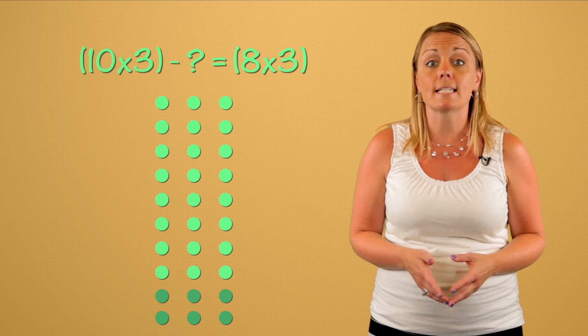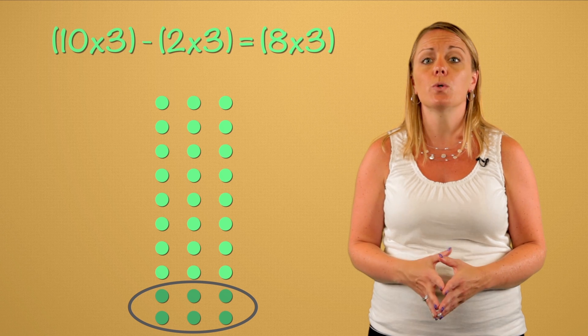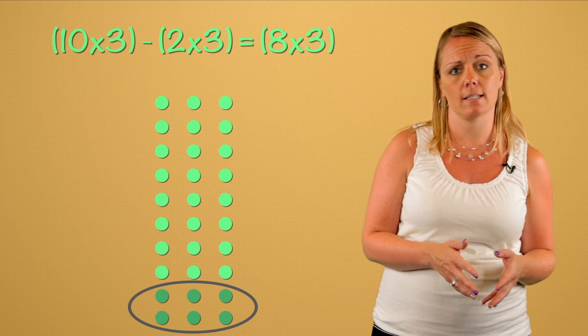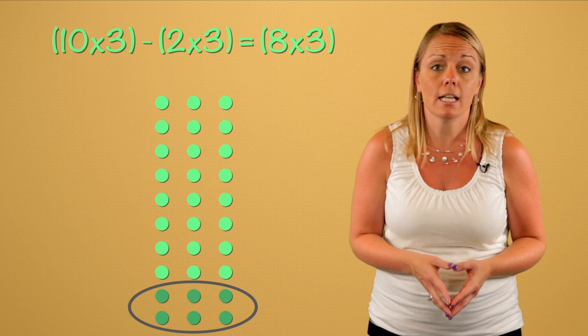How many threes do we need to remove or take away from ten threes to get to eight threes? We need to subtract two threes from ten threes to get to eight threes. Ten times three is thirty.